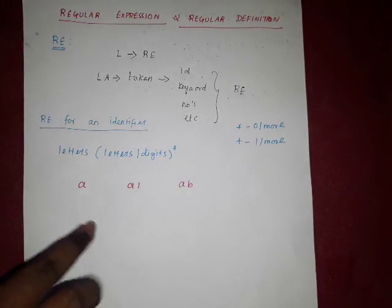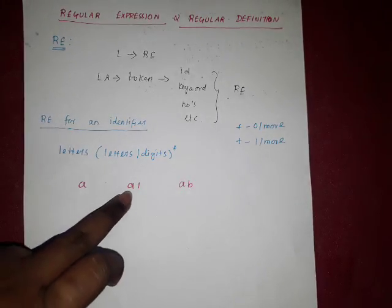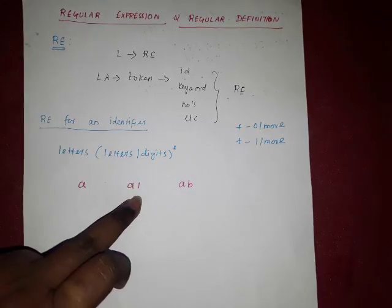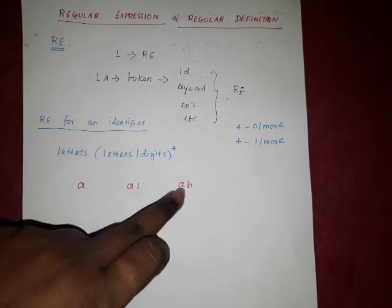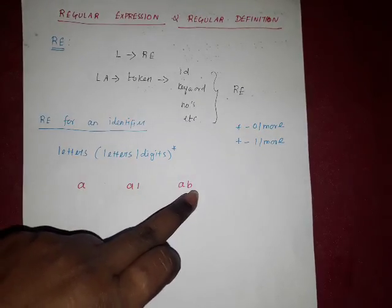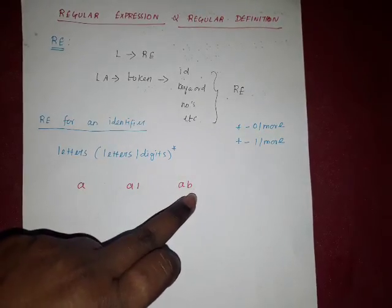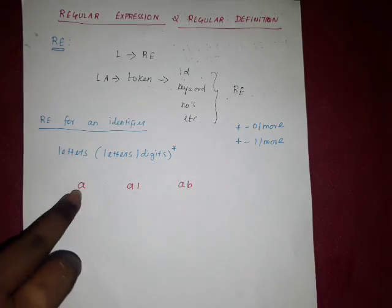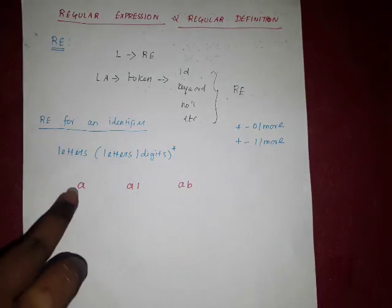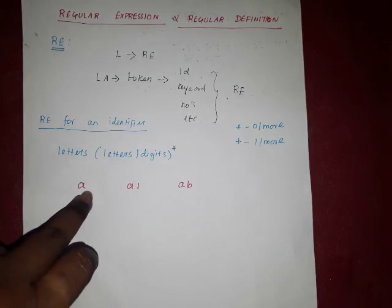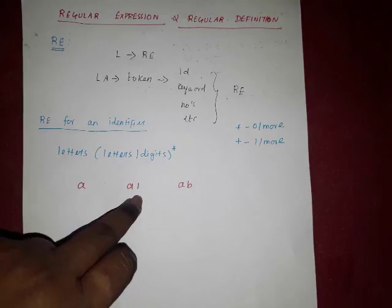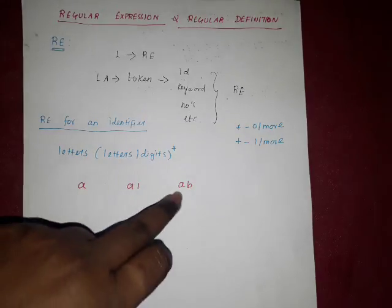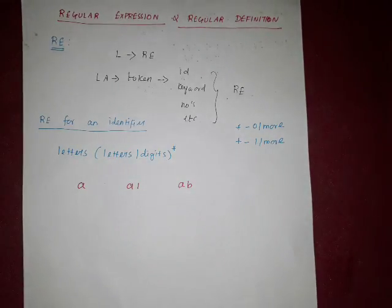Here, 'a' is followed by nothing. Here, 'a' is followed by some number — any number. And here, 'a' is followed by alphabets. So 'a' is a letter. Letter is followed by nothing, letter is followed by digit 1, and letter is followed by another letter.